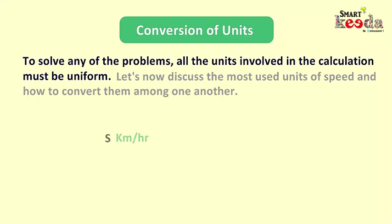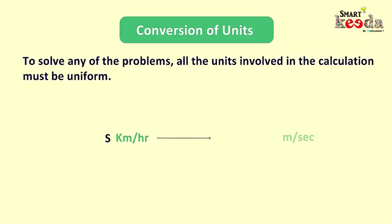The first one is kilometer per hour and we are to convert it in meter per second. Here we have assumed the speed to be S kilometer per hour and we are to convert it in meter per second. We know that in one kilometer there are 1000 meters and in one hour there are 3600 seconds. But we are not going to use these values in our questions.